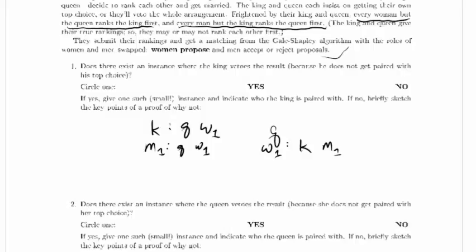So both of these people want the queen. And we've seen that sort of situation before. If all of the men rank the queen first, then whoever the queen ranks first, she will marry. So if she ranks the king first, the king will again get his top choice. So we won't do that. We'll rank M1 first.